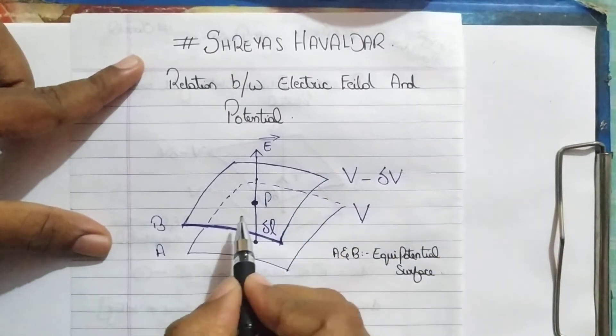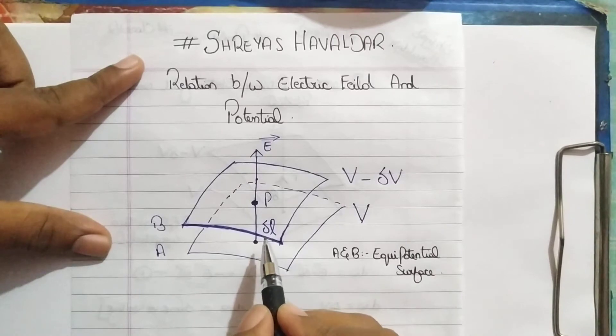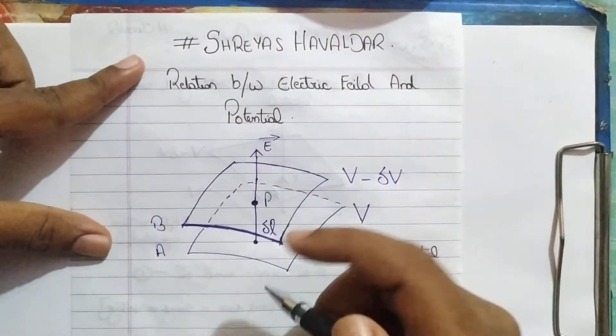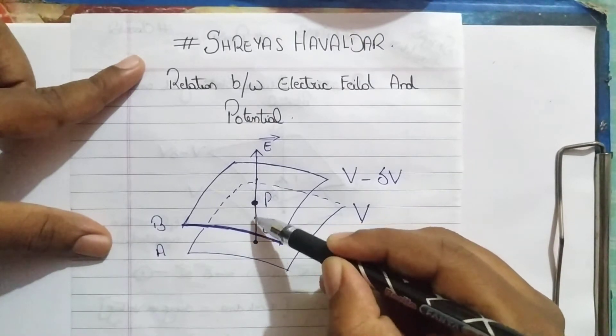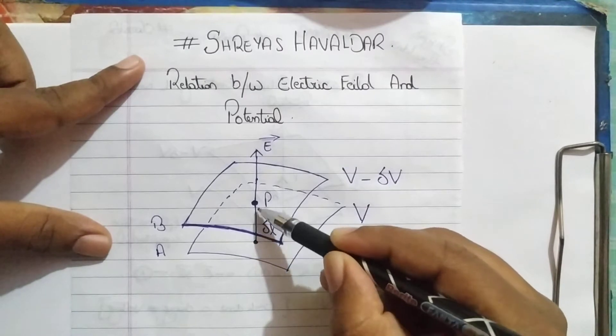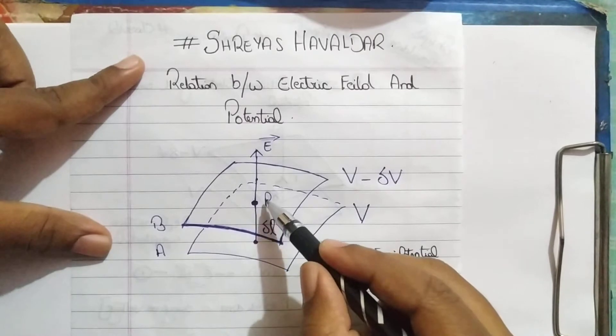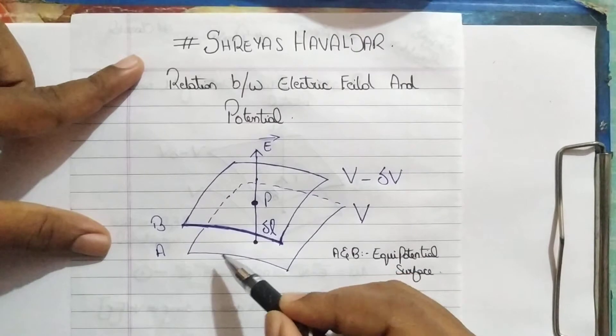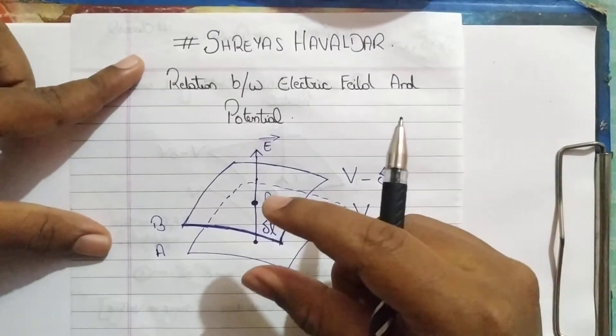Delta V is the difference between the voltage from equipotential surface A to equipotential surface B. And P is the point on the equipotential surface B and delta L is the distance, the perpendicular straight distance from the surface B to the point which is projected perpendicularly to point A. The distance between them is delta L.